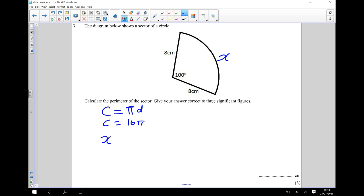So the length x is going to be whatever fraction of the whole circle that I've got times by the circumference here, which is 16 lots of pi.